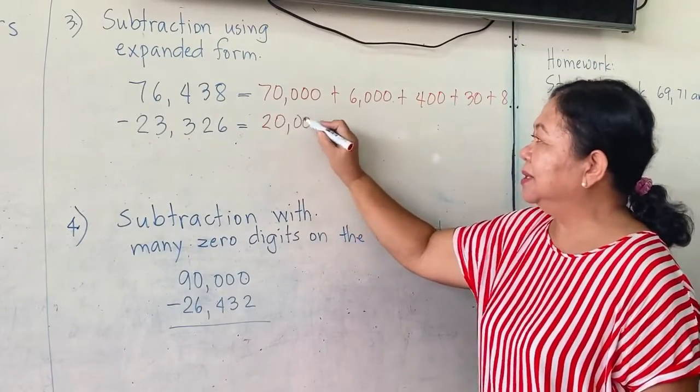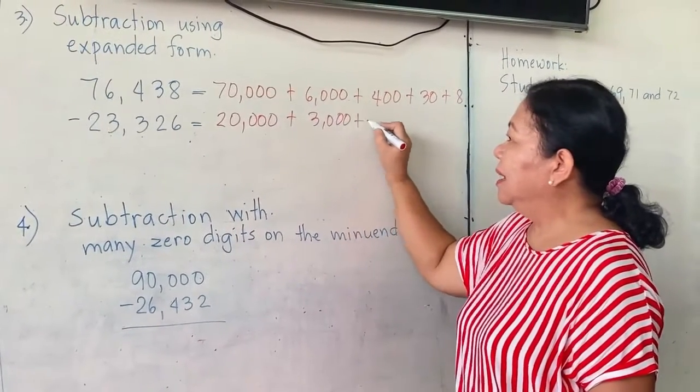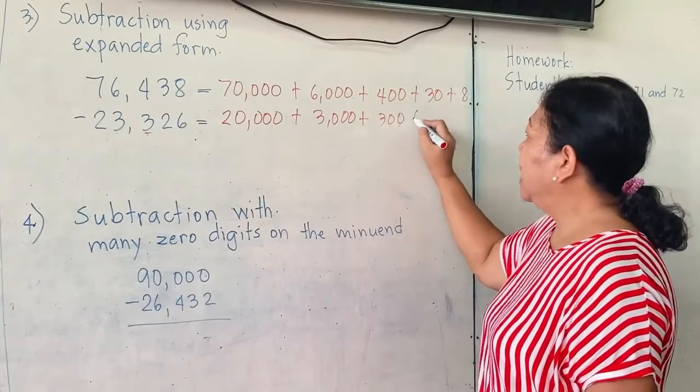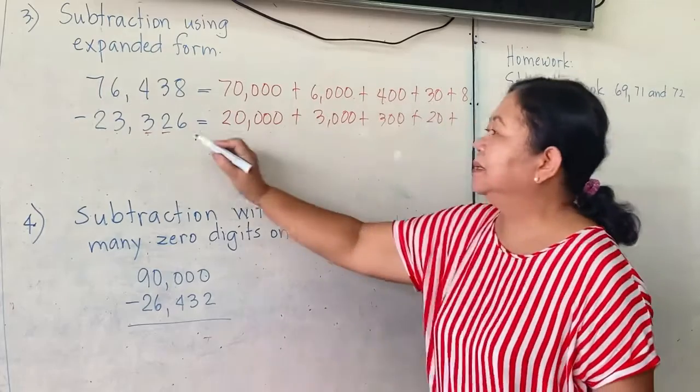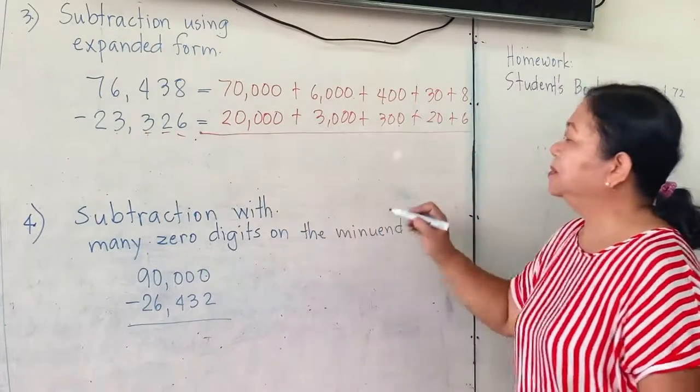Let's subtract 20,000 plus 3,000 plus 300 plus 20 plus 6. Okay. Then let's subtract.